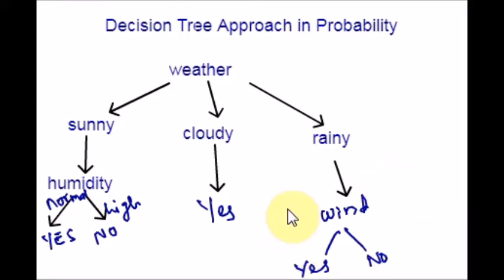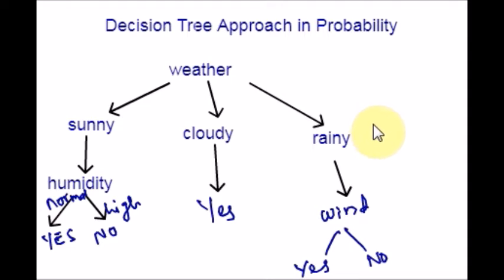Hope you got a better idea of the whole concept. The decision tree is a kind of probability tree that helps you to make a theoretical or practical decision. In case you have any query regarding this topic, kindly let me know. See you in the next video. Have a great time ahead. Thank you.